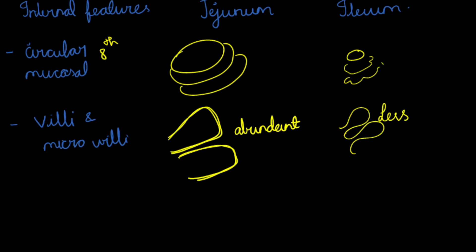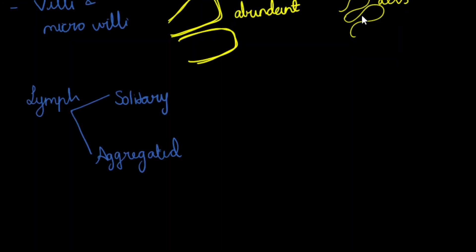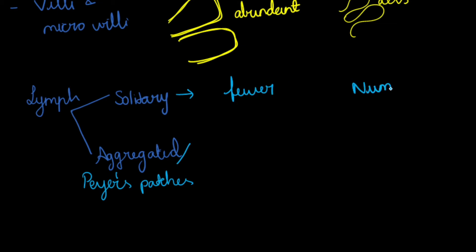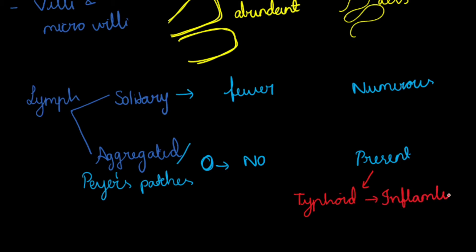Regarding the lymphatic follicles present in both jejunum and ileum: there are two types — solitary and aggregated. The aggregated lymphatic follicles are also called Peyer's patches, which have clinical significance. In the jejunum, solitary lymphatic follicles are fewer in number, and there are no Peyer's patches. In the ileum, there are numerous solitary lymphatic follicles and Peyer's patches are present. Clinically, in typhoid infection there will be inflammation of Peyer's patches, and during the weaning period in pediatric age group, inflammation of Peyer's patches leads to intussusception or intestinal obstruction.